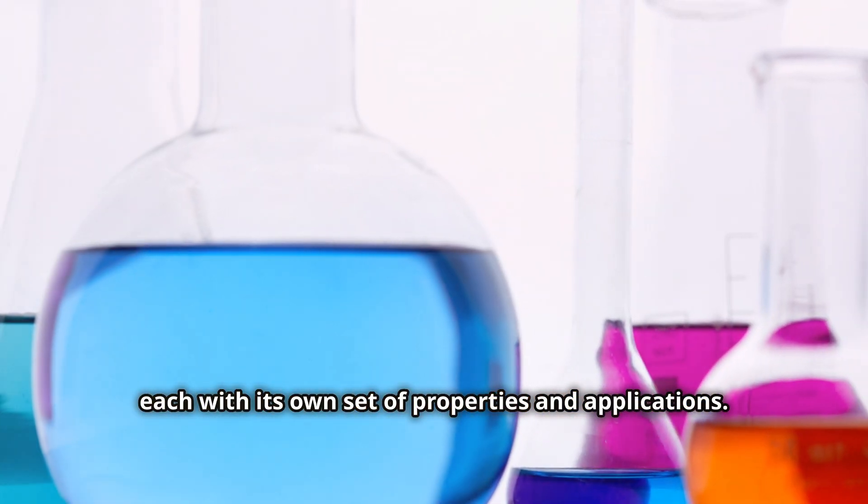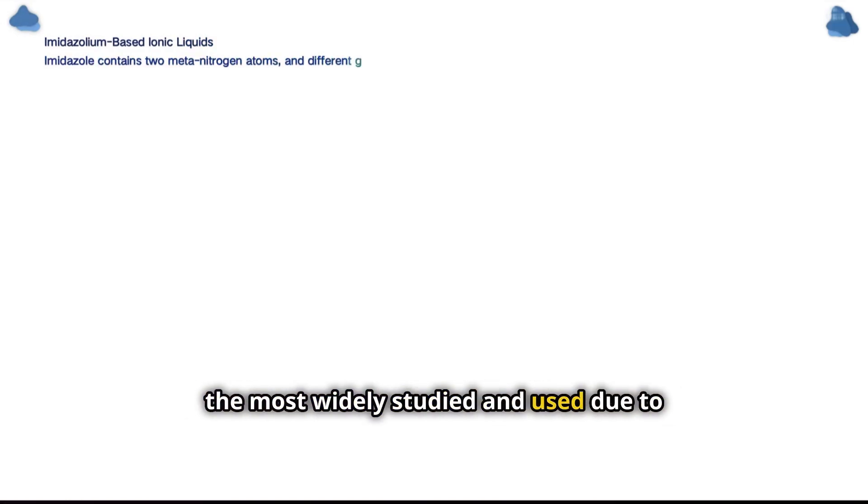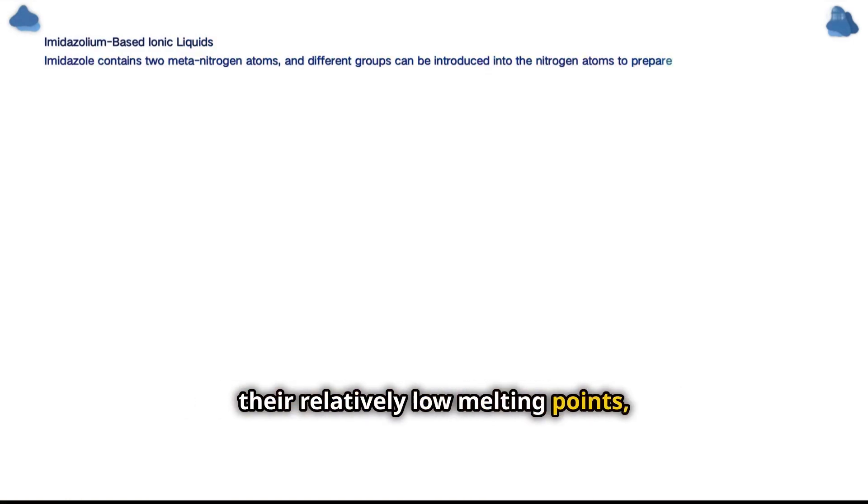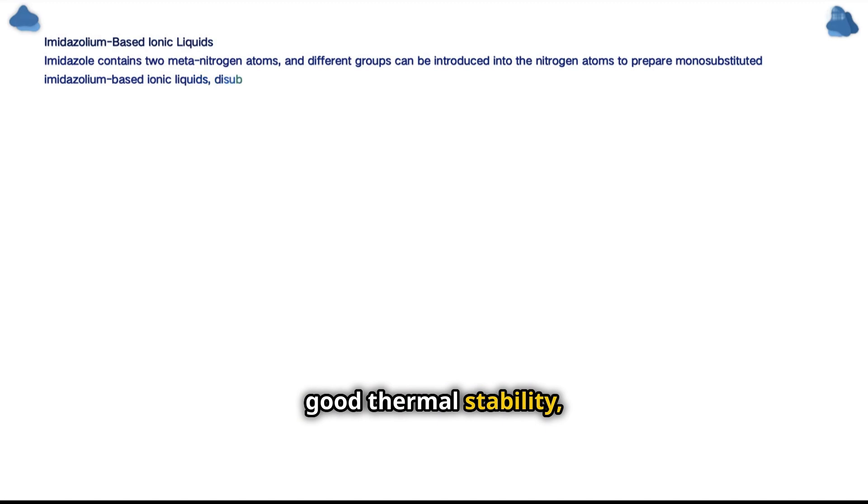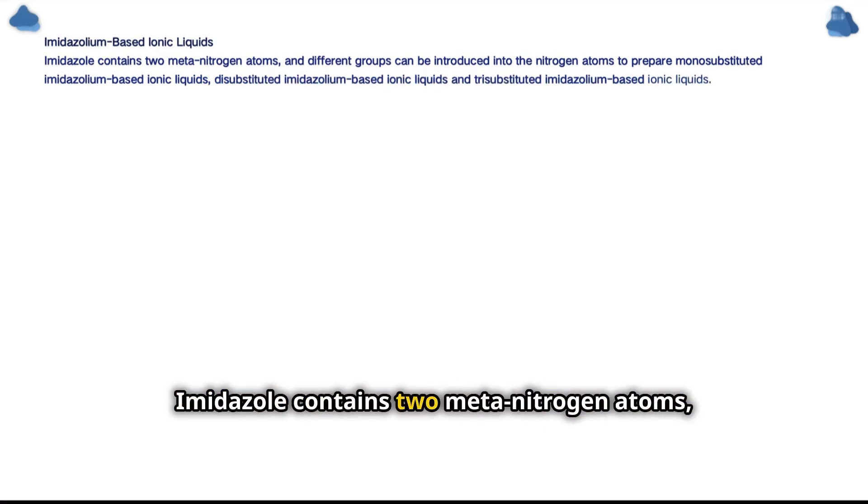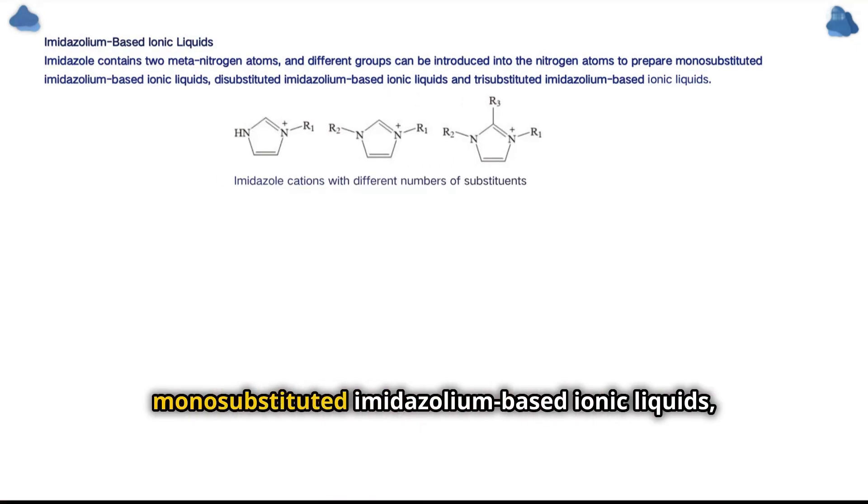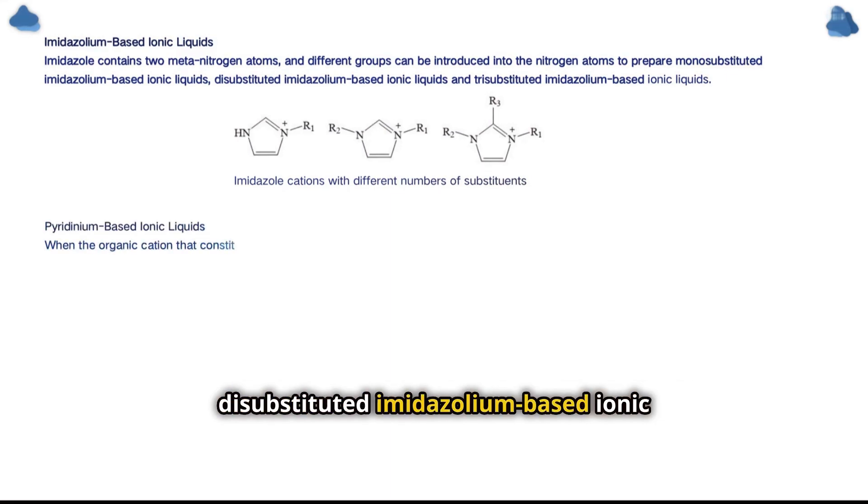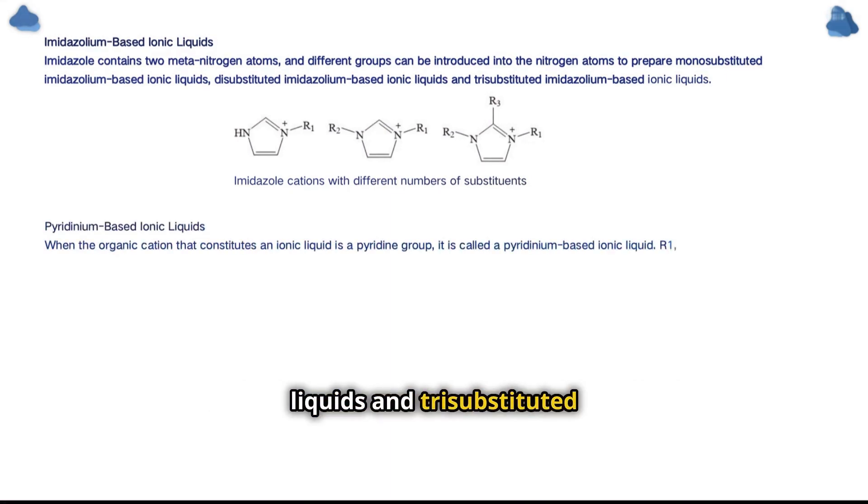Several types of ionic liquids have been developed, each with its own set of properties and applications. Imidazoleum-based ionic liquids are among the most widely studied and used due to their relatively low melting points, good thermal stability, and wide electrochemical windows. Imidazole contains two meta nitrogen atoms, and different groups can be introduced into the nitrogen atoms to prepare monosubstituted imidazoleum-based ionic liquids, disubstituted imidazoleum-based ionic liquids, and trisubstituted imidazoleum-based ionic liquids.